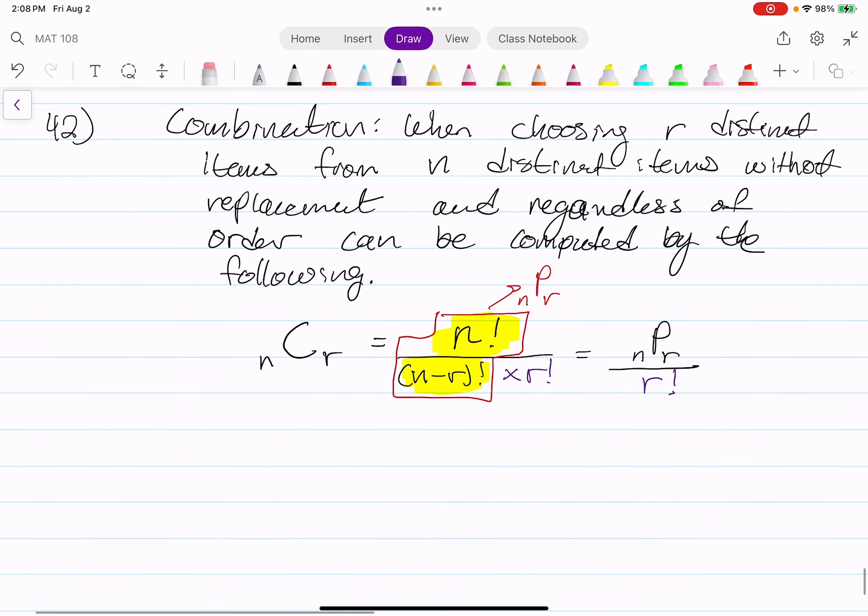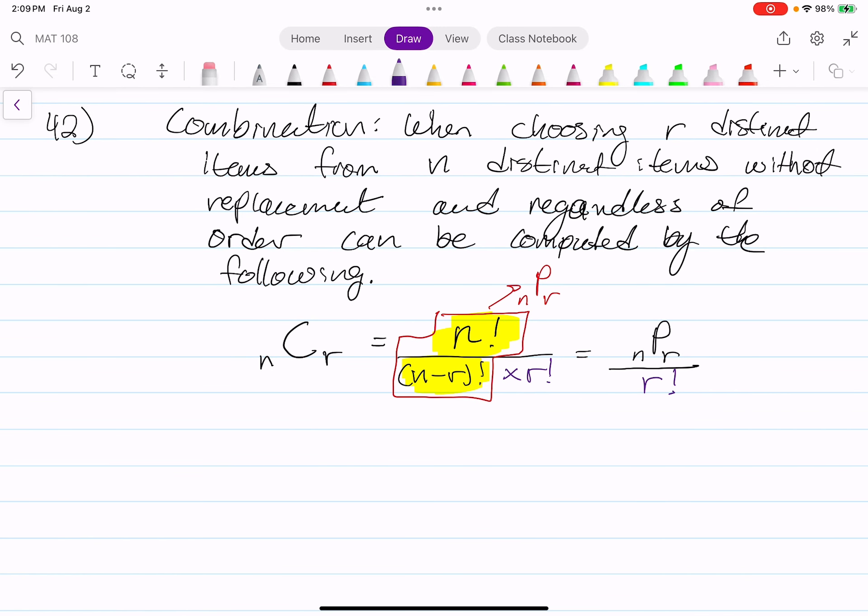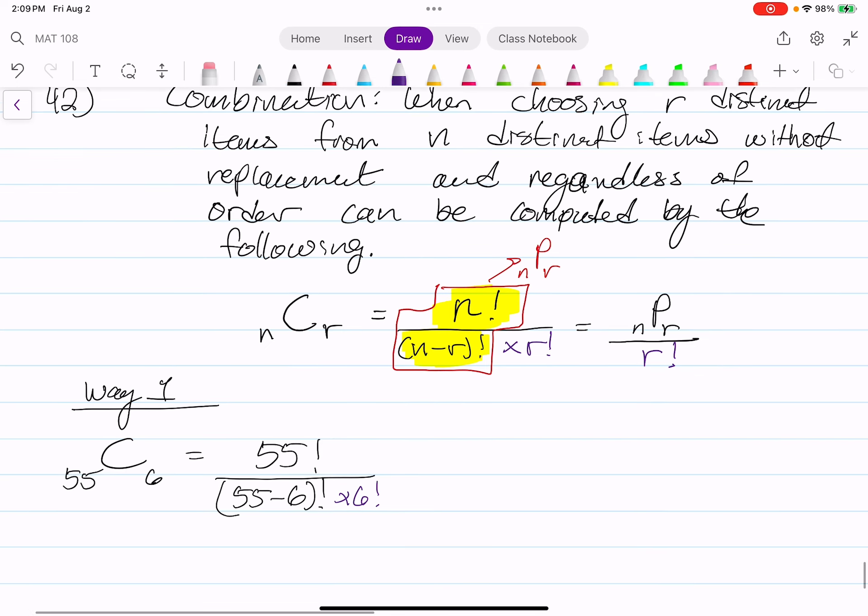So for number 42, we have, well, I'm going to say way one. It's a combination of 55 balls and you're choosing six. So that's going to equal to 55 factorial divided by the quantity of 55 minus 6 factorial and I'm going to put that other times 6 factorial in a different color.